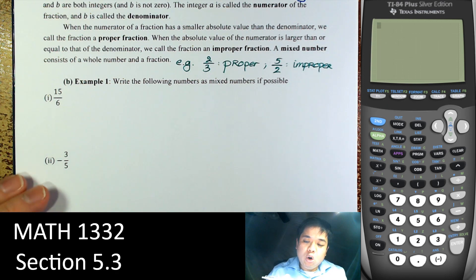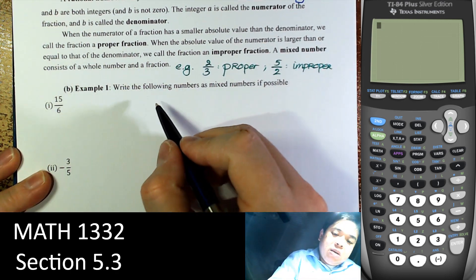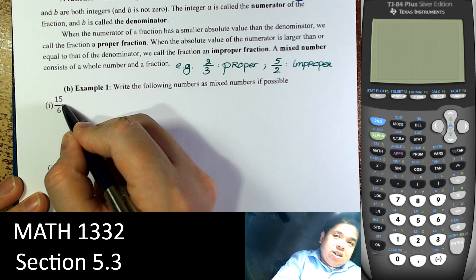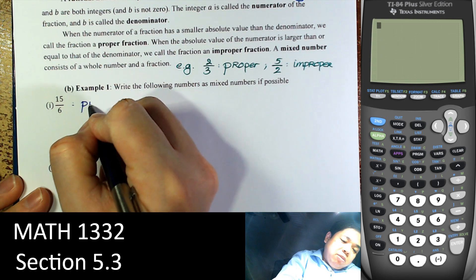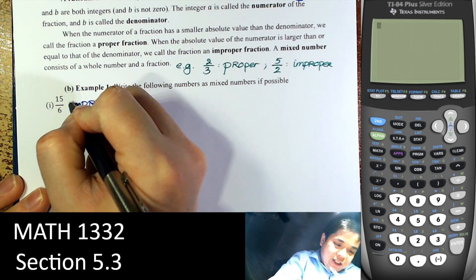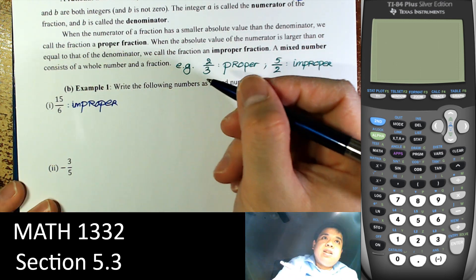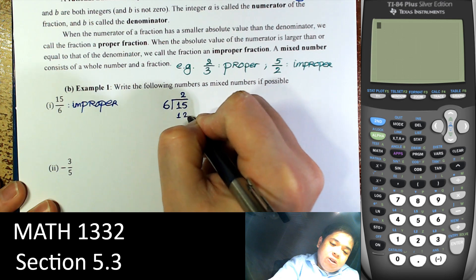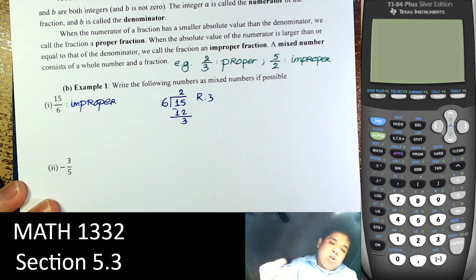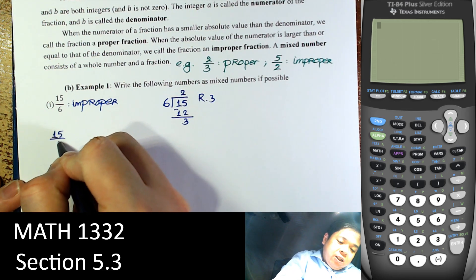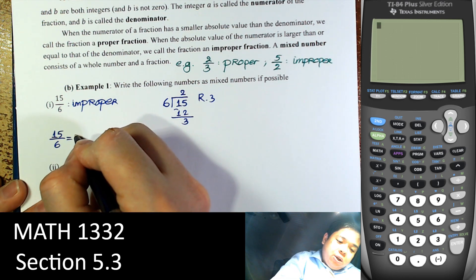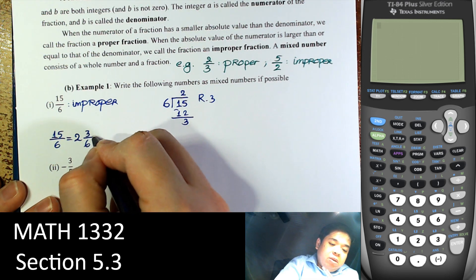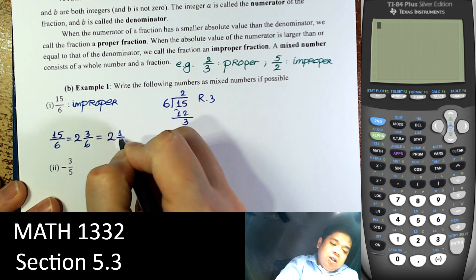Write the following number as a mixed number, if possible. So 15 over 6 — the mixed number is where we work with the improper fraction. This one is improper, so yes, we can write it as a mixed number. 6 goes into 15 two times; 2 times 6 is 12, subtract to get remainder 3. So 15 over 6 is 2 and 3/6, and then dividing top and bottom by 3 gives us 2 and 1/2. That is the mixed number in reduced form.